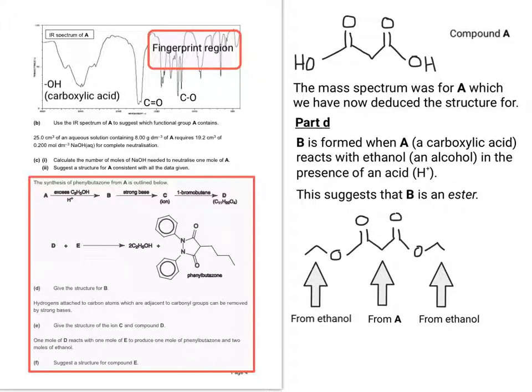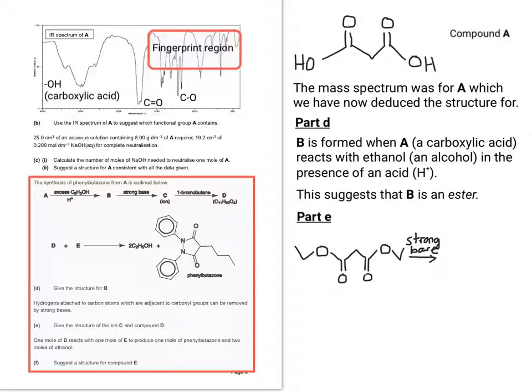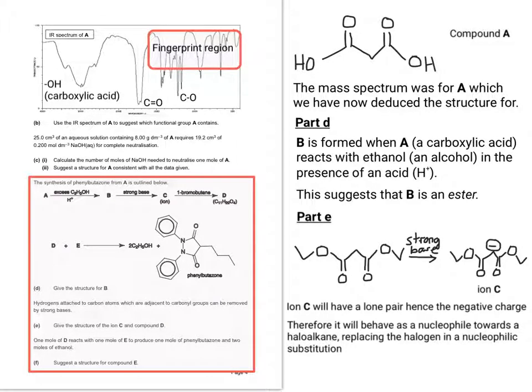Then the next one, part E, says give the structure for C. And if we take our ester, it says that you need to think about hydrogens attached to carbon atoms which are adjacent to carbonyl groups can be removed by strong bases. So I've pointed out where 2 hydrogens can be removed. So that now means that that gives us an ion. So ion C will have a lone pair, hence its negative charge.